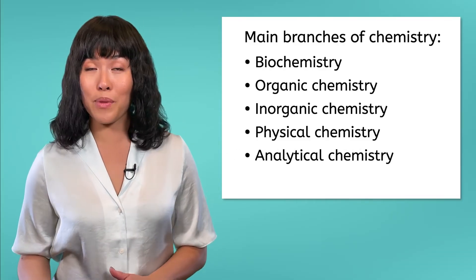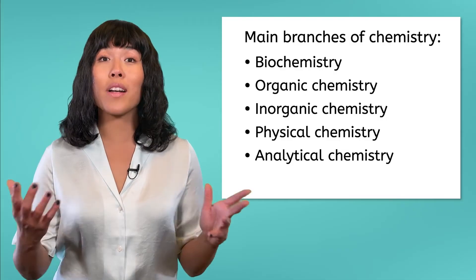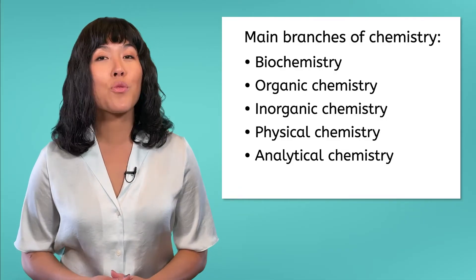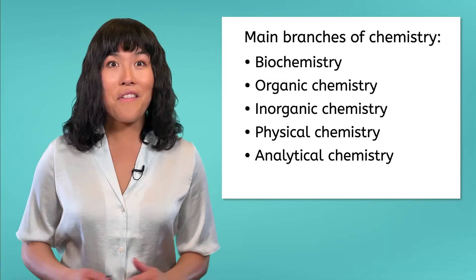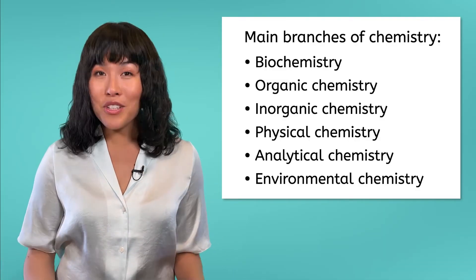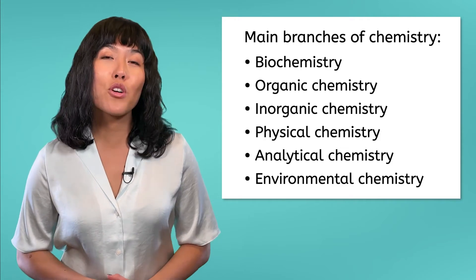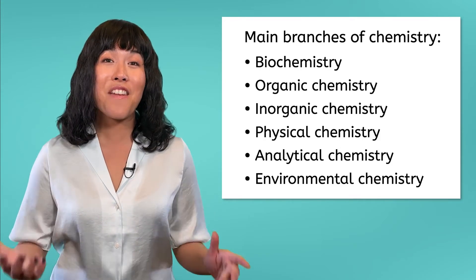Analytical chemistry focuses on studying matter in a quantitative way, analyzing numerical data as well as general observations. Finally, environmental chemistry looks at how chemical processes affect the environment. Chemistry, both as a whole and in these individual branches, is how we understand the matter that makes up everything in our universe, from the stars to the trees to even ourselves.